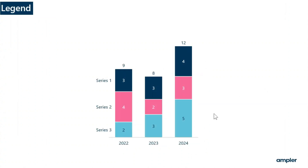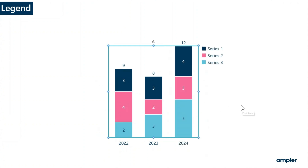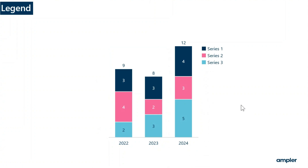Legends can be added to all charts except Gantt charts. To add a legend, right click on the chart and toggle on legend from the context menu. When you add a legend, all other series labels are automatically removed.